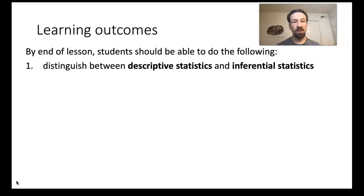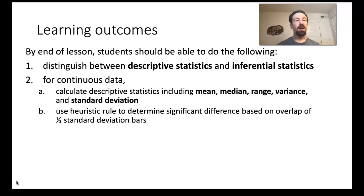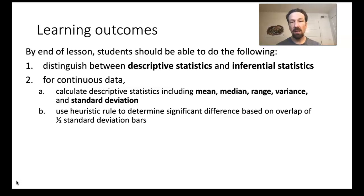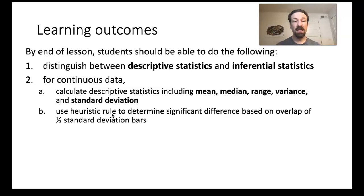First, you should be able to distinguish between descriptive statistics and inferential statistics. Second, for continuous data—we will define continuous as opposed to discrete data as we go—you should be able to calculate descriptive statistics including the mean, median, range, variance, and standard deviation. You should also be able to use a heuristic rule to determine significant differences based on overlap of one-half standard deviation bars on bar graphs.